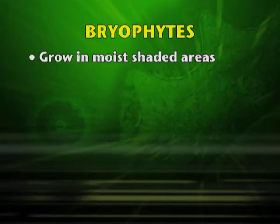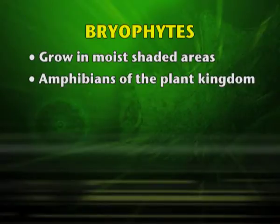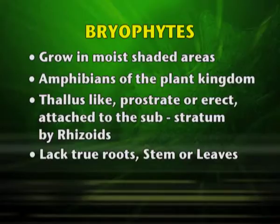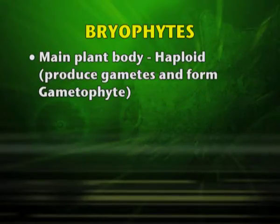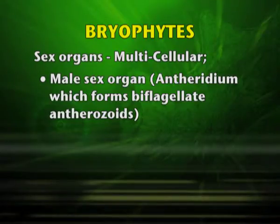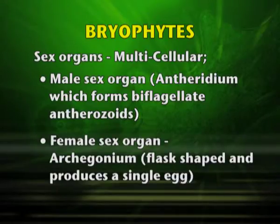Bryophytes grow in moist and shaded places and are known as the amphibians of the plant kingdom. They are thallus-like, prostrate or erect, and attached to the substratum by root-like structures called rhizoids. They lack true root system, stem or leaves. The main plant body is the haploid gametophyte which produces gametes; the sex organs are multicellular. The male sex organ is the antheridium, which forms biflagellate antherozoids, and the female sex organ is the archegonium, which is flask-shaped and produces a single egg.